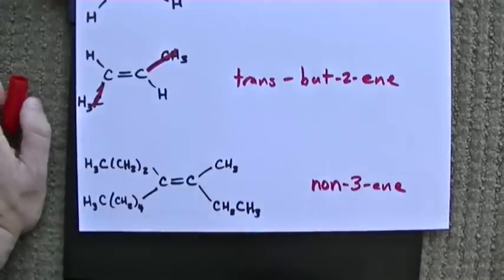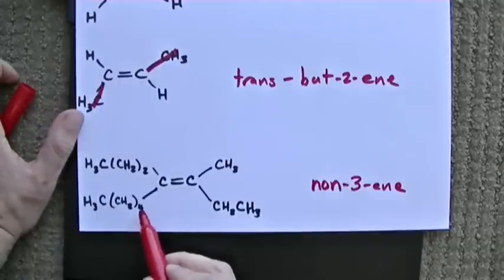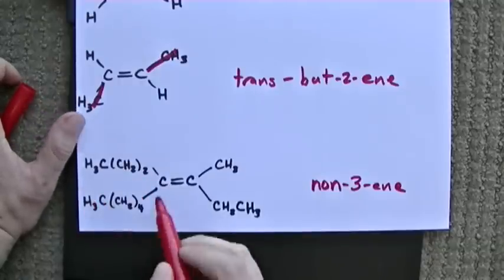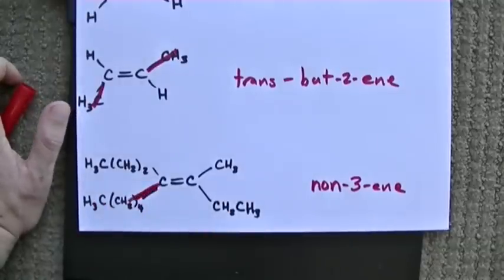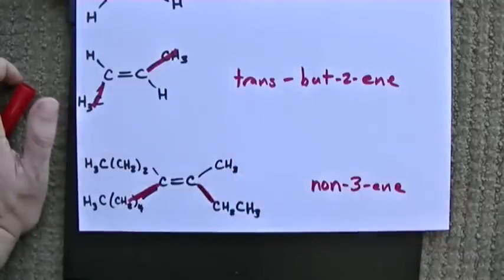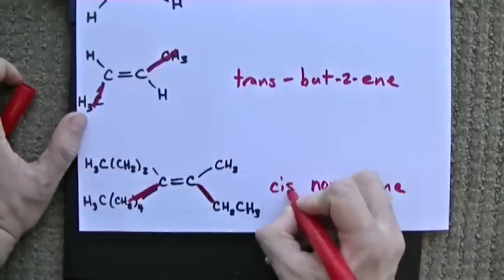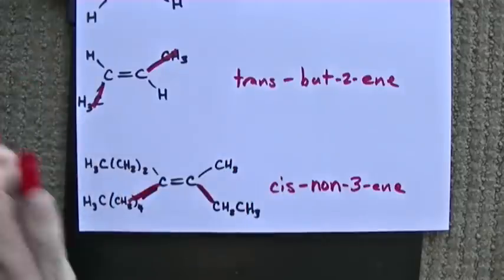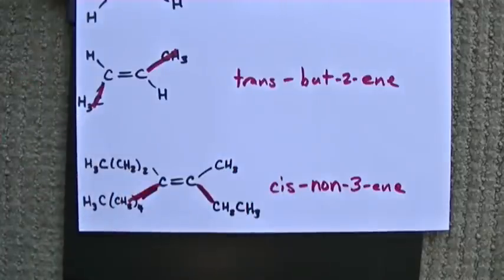Now, which groups take precedence here? This group is five carbons long, and this is three carbons long. So this one does. This group's two carbons long. This one's one carbon long. So this one does. This is called cis because they're both on the same side of the double bond.